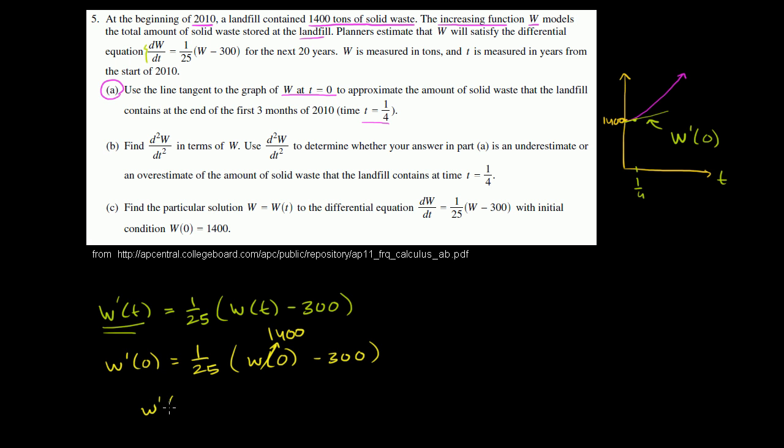So this right over here is 1,400. And so we have w prime at time equals 0, our slope at time equals 0, our derivative at time equals 0, is equal to 1 over 25 times 1,400 minus 300 is 1,100. And 25 goes into 1,100 44 times. It goes four times into each 100, we have 1,100 here, so it'll go 44 times.